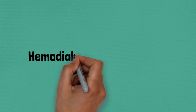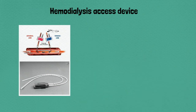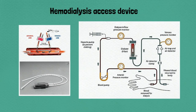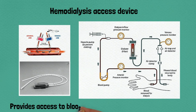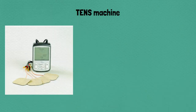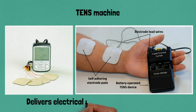Eighty-six: hemodialysis access, provides access to blood vessels for hemodialysis treatment. Eighty-seven: TENS machine, delivers electrical impulses to relieve pain.